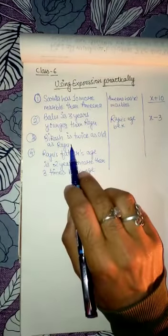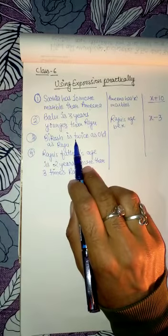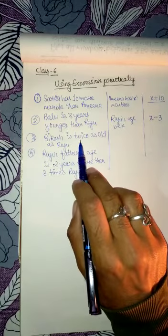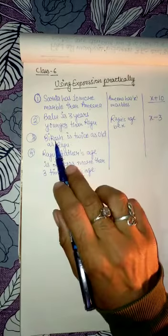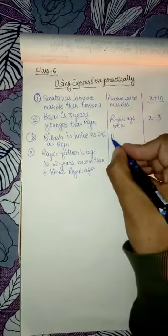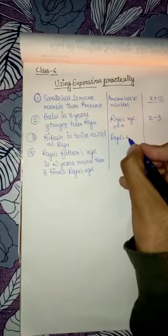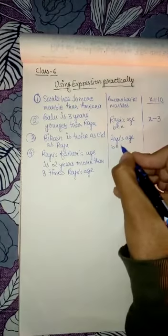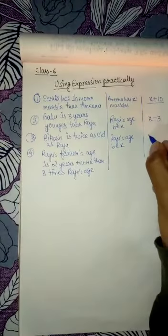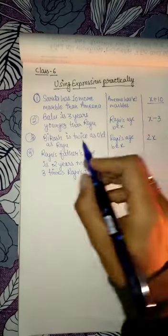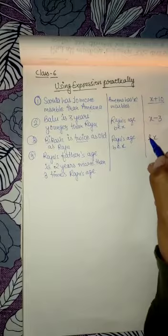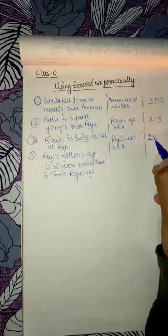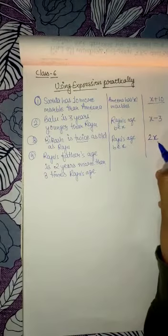Now in the third question, Bikash is twice as old as Raju. 'Twice' means times — that is, we have to multiply. Bikash is compared to Raju, so Raju's age is X, and Bikash's age will be 2X. When writing a multiplication expression, we write the constant value and the variable together.